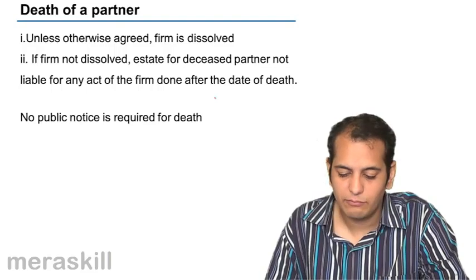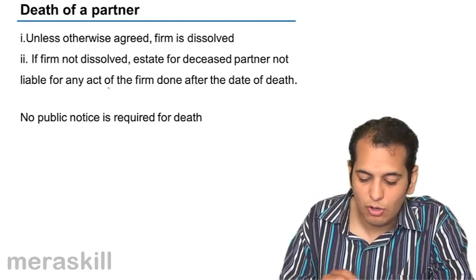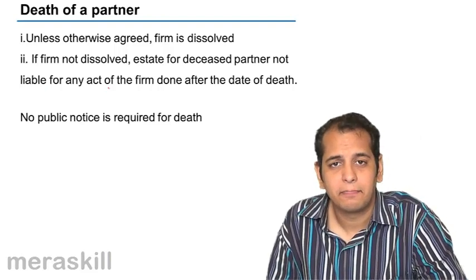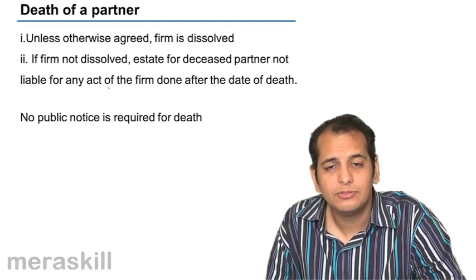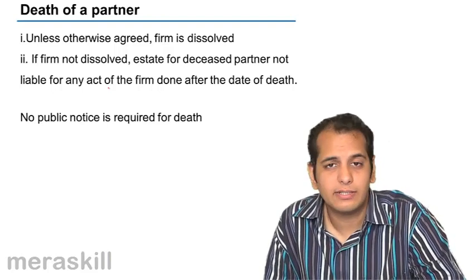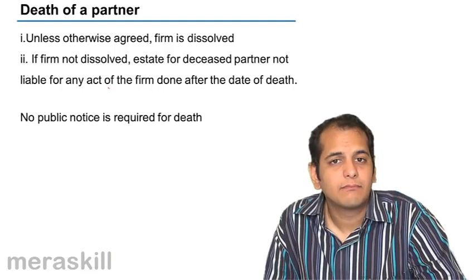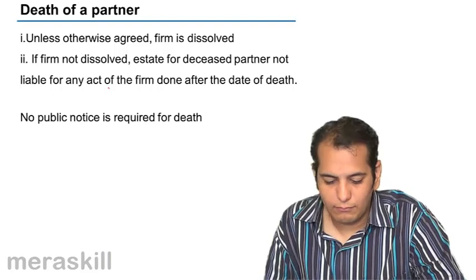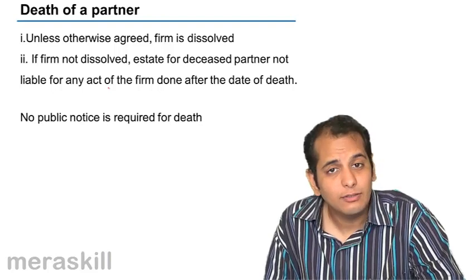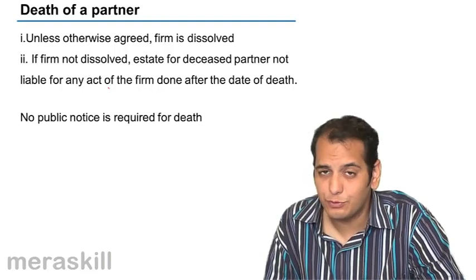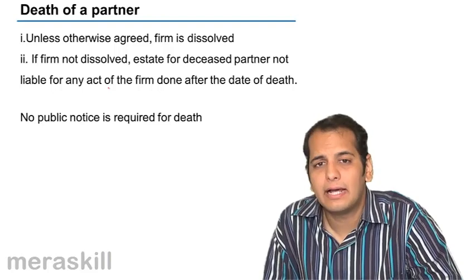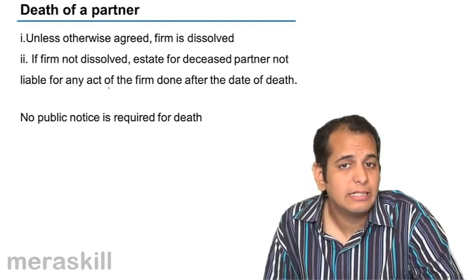If the firm is not dissolved after a partner's death, the estate of the deceased partner is not liable for any act done after the date of death. When the firm is eventually dissolved, his accounts are settled. But if his accounts are not settled after his death, the property of the deceased partner in the firm — his capital, his assets, his cash, his profit, whatever property he has in the firm — will not be liable to outsiders' debts or liabilities.